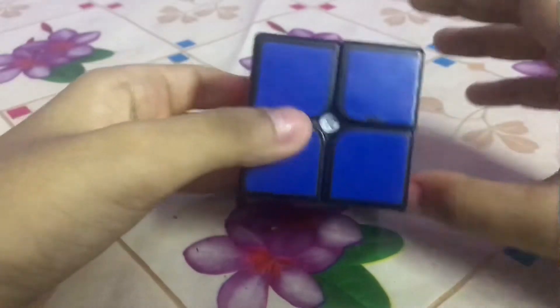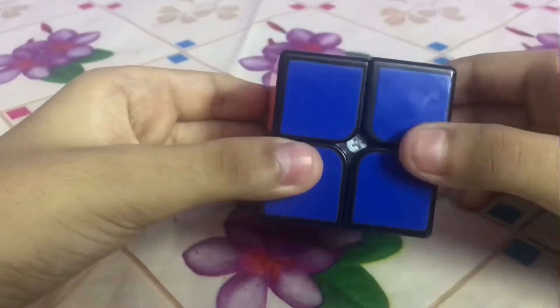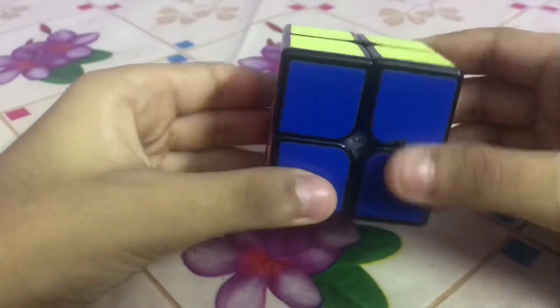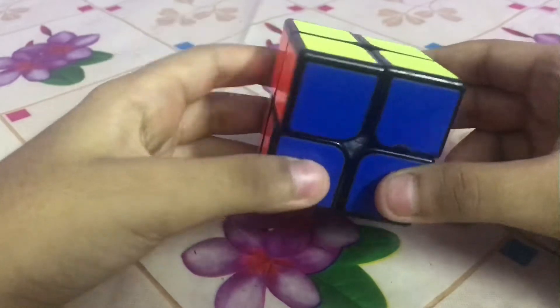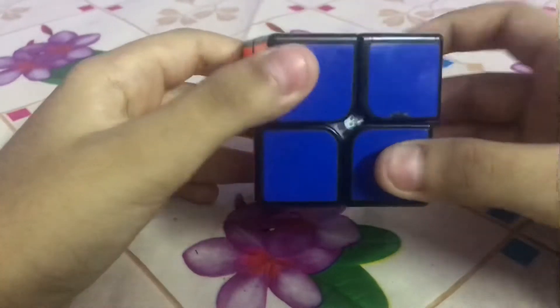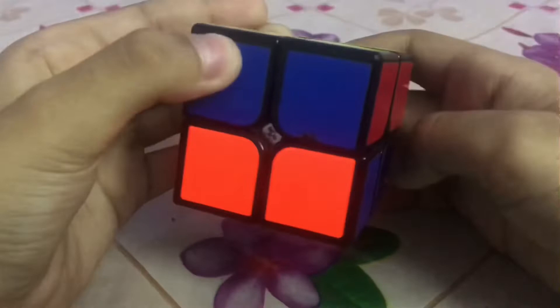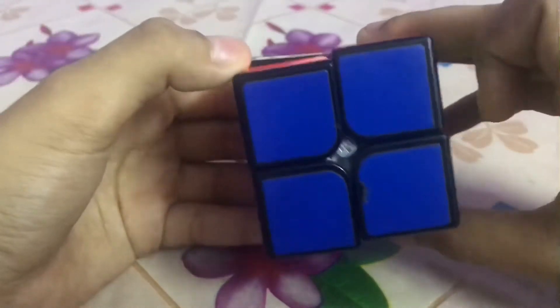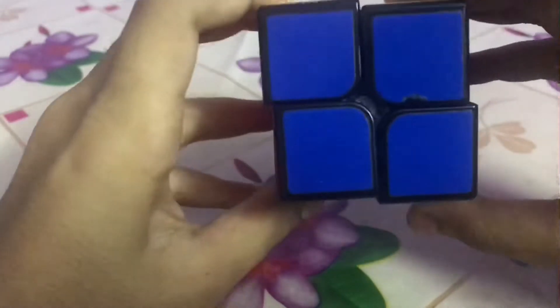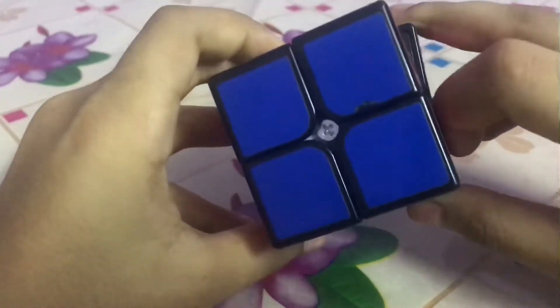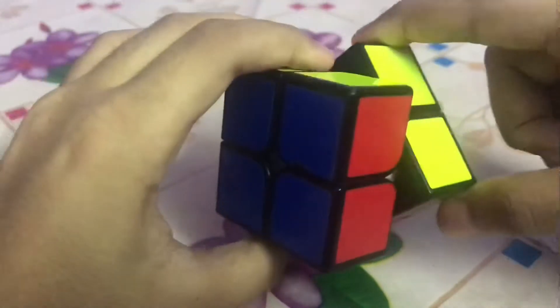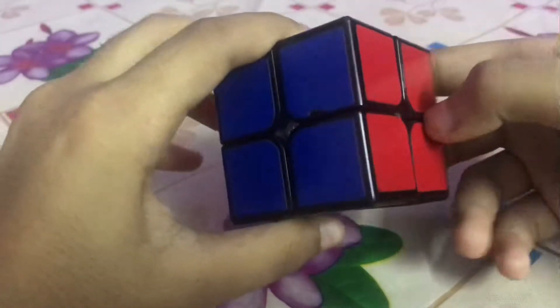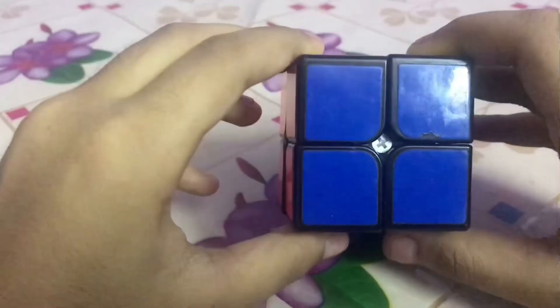In a Rubik's cube, this is R, R dash, L dash, L, U, U dash, D dash, D, F, F dash, B dash, B. In solving a 2x2 Rubik's cube, you actually don't need B or B dash, but you have to do B2.